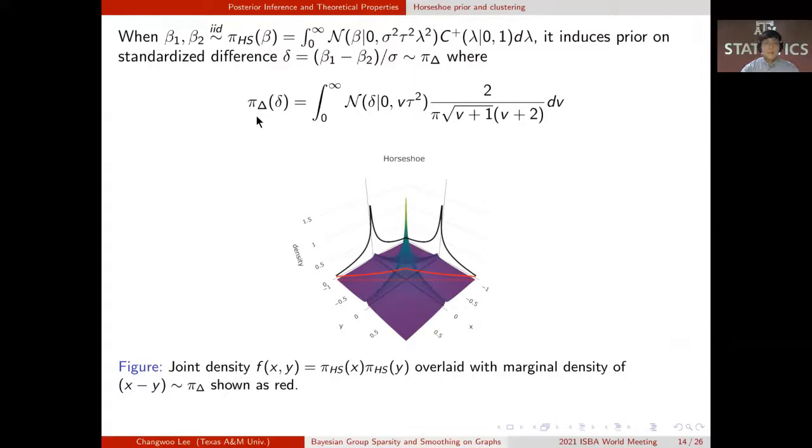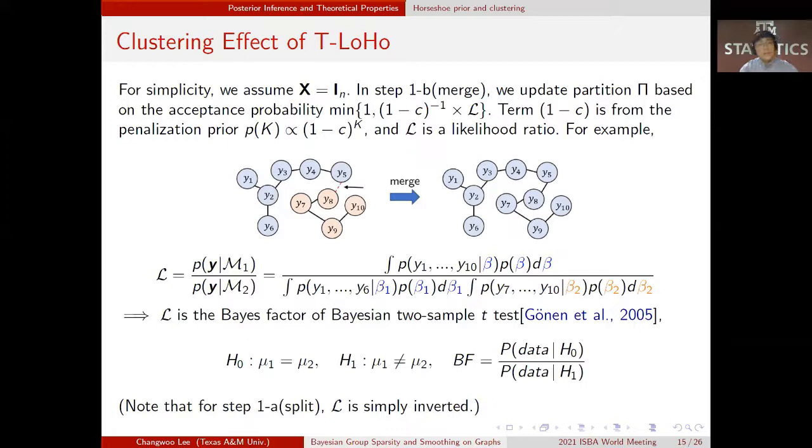For simplicity, we'll assume design matrix X's identity. Recall that we accept partition based on the acceptance probability, which includes penalty term 1-c and the likelihood ratio L. The likelihood ratio L is expressed as follows by integrating out the cluster means beta. Here, the likelihood ratio L exactly corresponds to the Bayes factor of the Bayesian two-sample t-test.